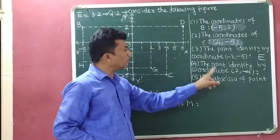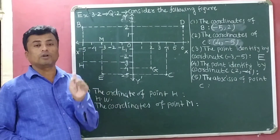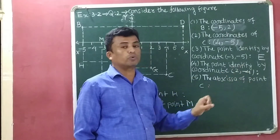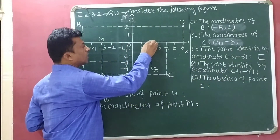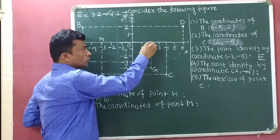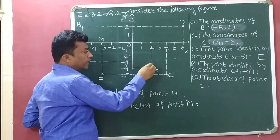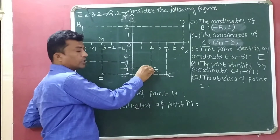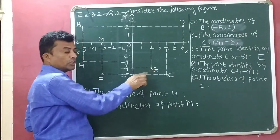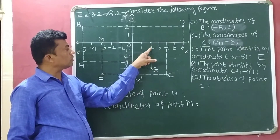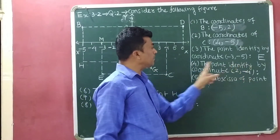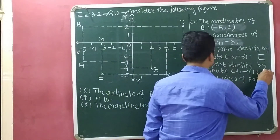Fourth, the point identified by coordinate (2, minus 4). Here we have to identify the point whose coordinates are 2 and minus 4, where 2 is the x-coordinate and minus 4 is the y-coordinate. A perpendicular from 2 and a perpendicular from minus 4 intersect at point G. So, point G is the point whose coordinates are (2, minus 4).